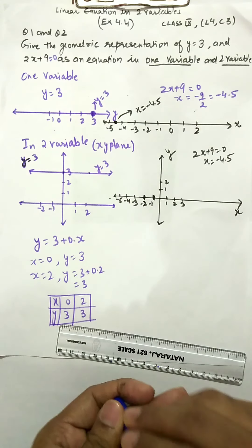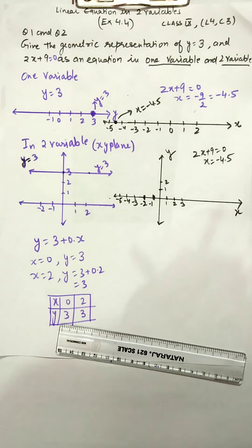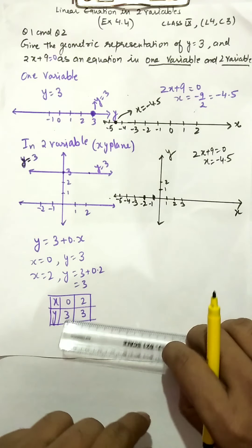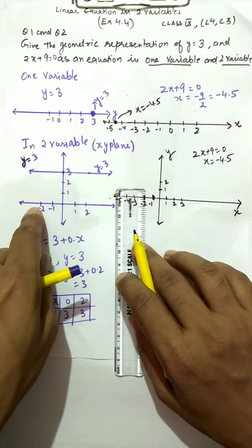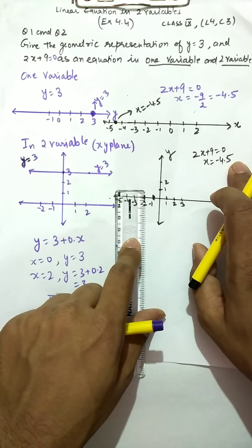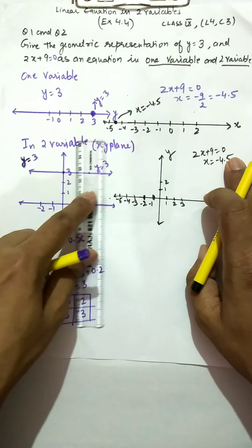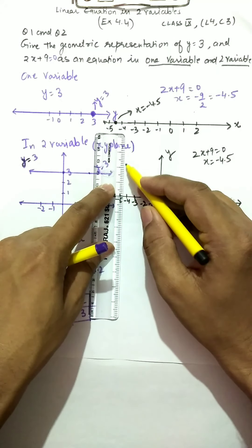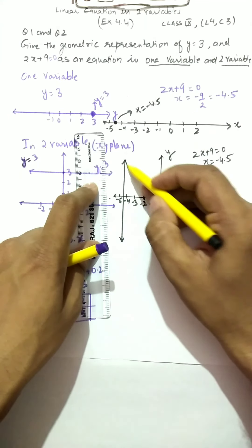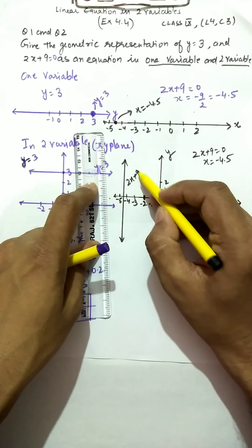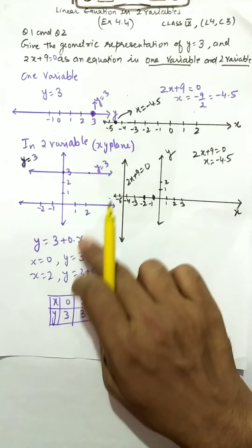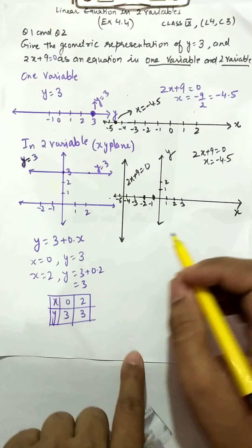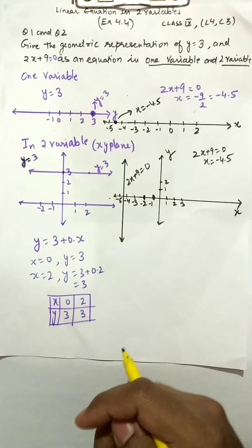Now for the second part: 2x + 9 = 0, represented as a linear equation in two variables on the x-y plane. We found x = −4.5. When x is written in this form (only x, no y), the line will always be parallel to the y-axis. So between −4 and −5 you draw the vertical line, and that is the line representing 2x + 9 = 0.